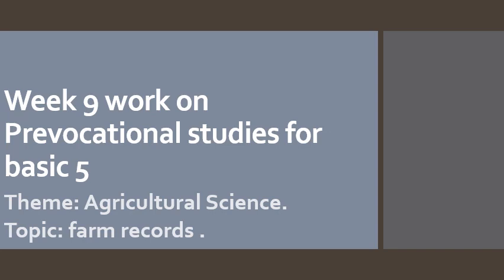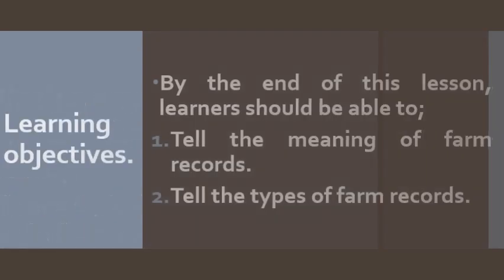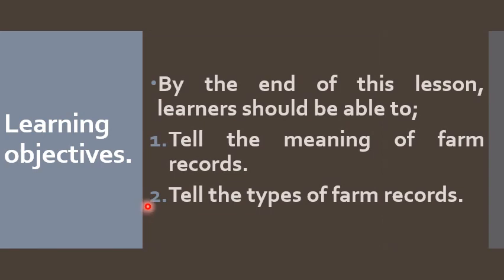Before we go through today's tutorial, let's know our learning objectives. By the end of this lesson, learners — you, who is the learner — should be able to: one, tell the meaning of farm records, and two, tell the types of farm records. So don't be scared, just stay tuned, stay focused, and you will be able to achieve these objectives. Let's keep learning.